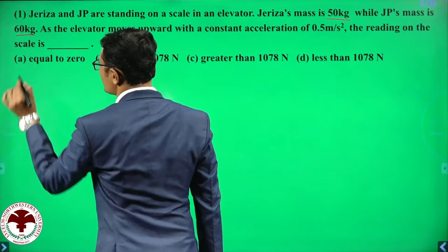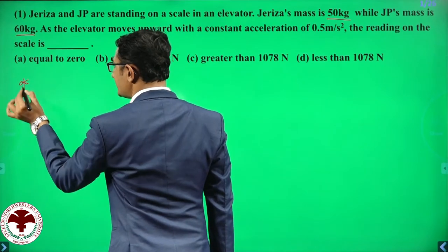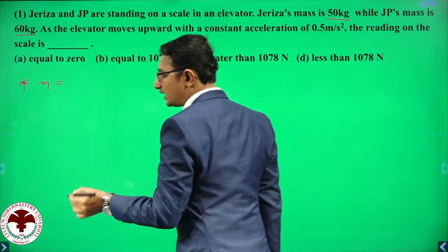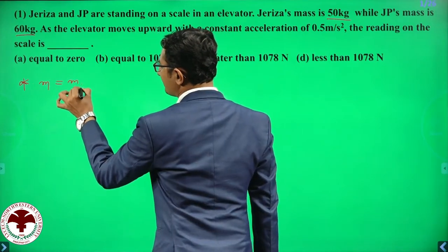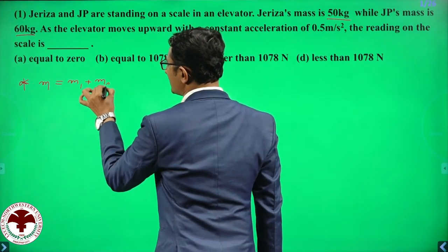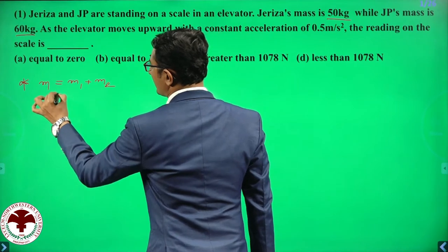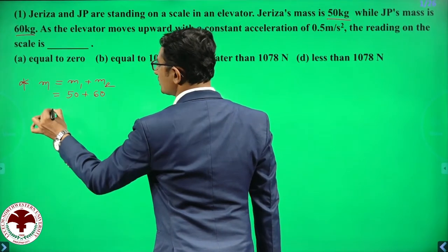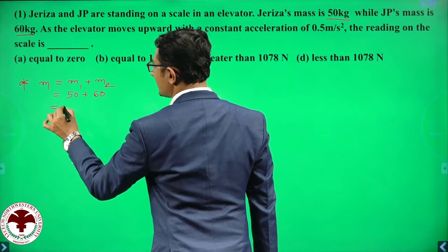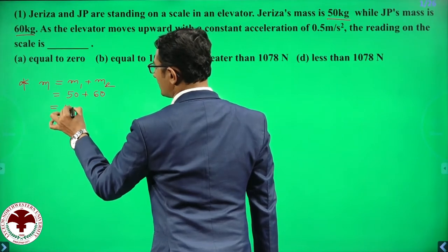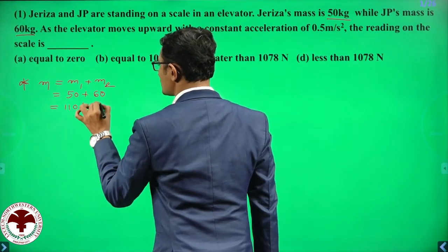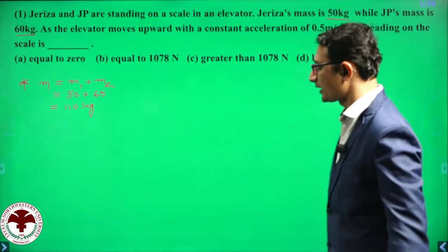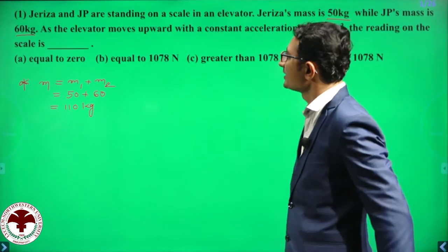First of all, we should calculate the total mass. Total mass M equals M1 plus M2. M1 is 50 kg and M2 is 60 kg, so total mass M equals 110 kg.